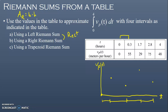The first interval goes from 0 to 0.3, so that's a width of 0.3. The next interval goes from 0.3 to 1.7, so that's a width of 1.4. From 1.7 to 2.8, we've got a width of 1.1. And then from 2.8 to 4, we've got a base of 1.2.